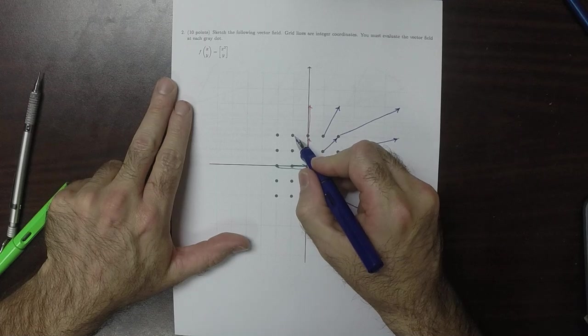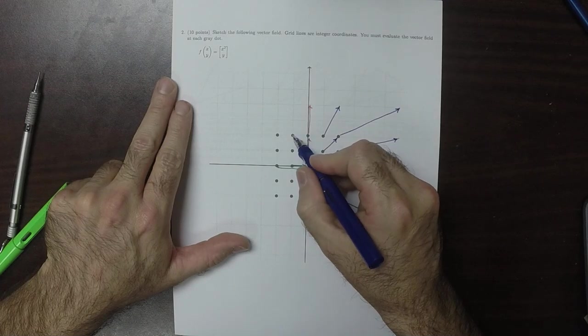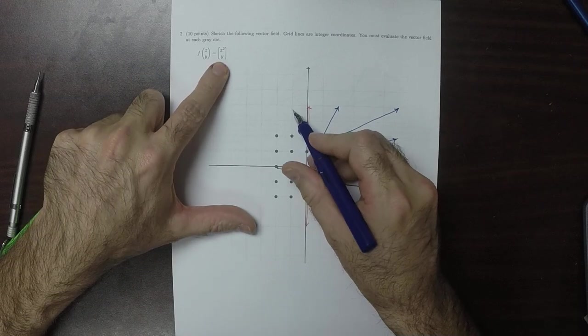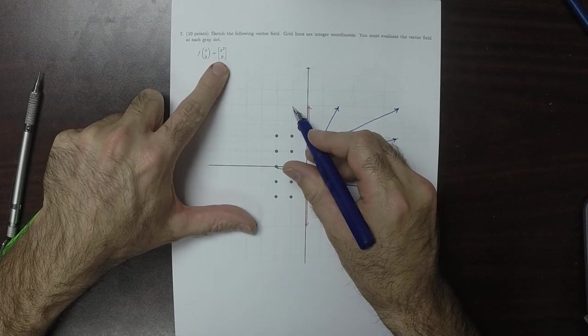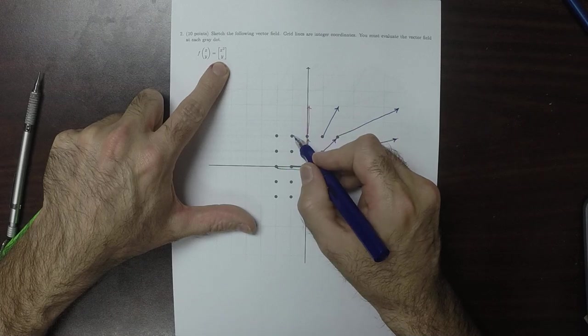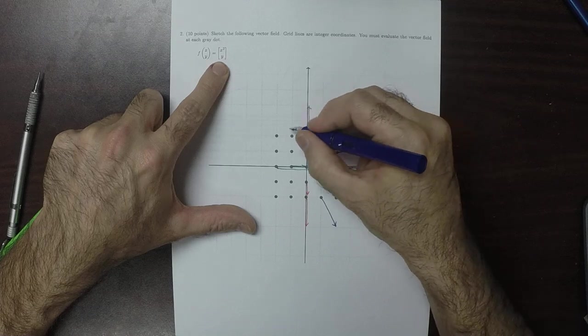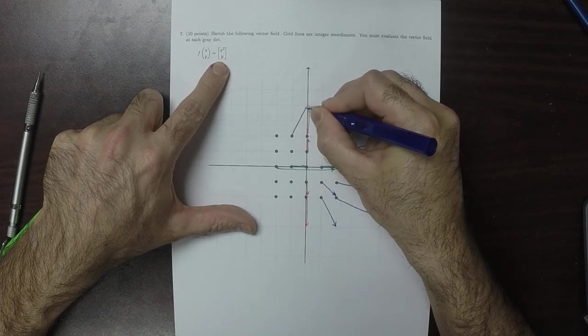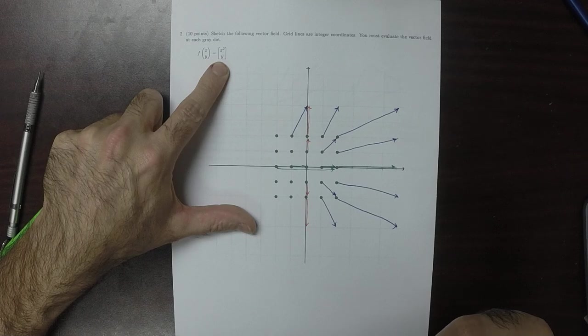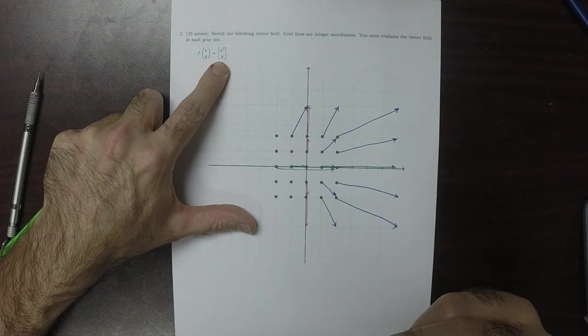Okay, almost there. So here x is negative 1 and y is 2, so we're going to go up 2. But then we're going to go over 1, because x is negative 1 and we square that, we go to the right one, like so. Good.